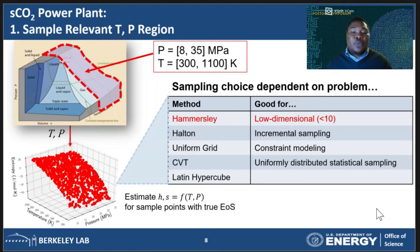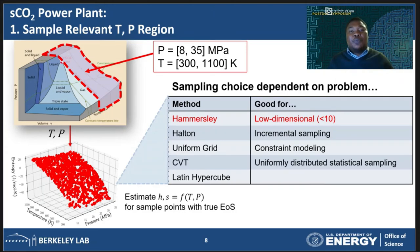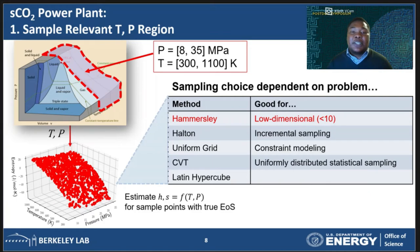However, we have discovered that different types of sampling methods represent different types of phenomena when generating surrogates, so we have implemented a number of sampling methods. For example, uniform grid sampling is good for constraint modeling because it places points at the corners of the design space, while Halton sampling has been shown to be well suited to incremental sampling. We needed tools that allowed us to either generate samples from scratch or select samples from data sets, and the sampling process was made more difficult by the fact that the tools needed to be plug and play — we needed to be able to swap out one method for another without having to change the models or the pipelines significantly.